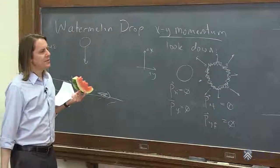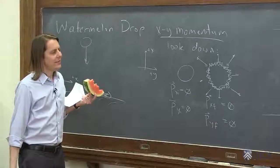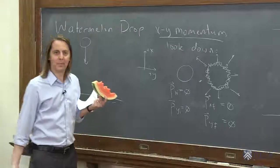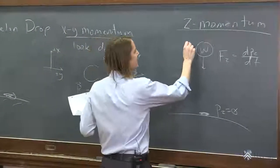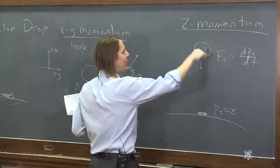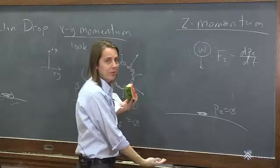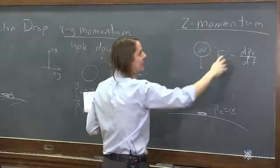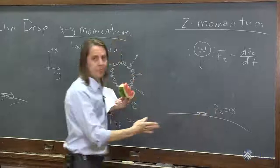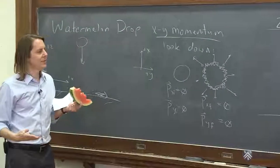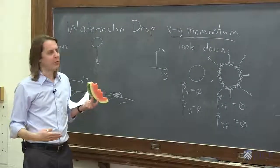So there's two ways to think about this. One is it's not an isolated system anymore, right? We had an isolated system of the watermelon, but it had an external force applied to it that increased p_z. And then when it hit the ground, it had a big external force the other way that took that p_z, decreased it back to zero. So if you want to think of the watermelon as the isolated system, it wasn't isolated. It had forces applied.